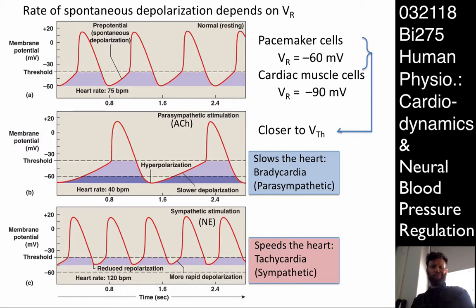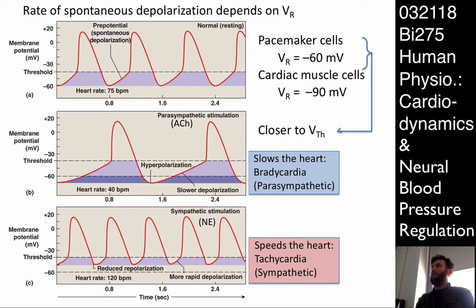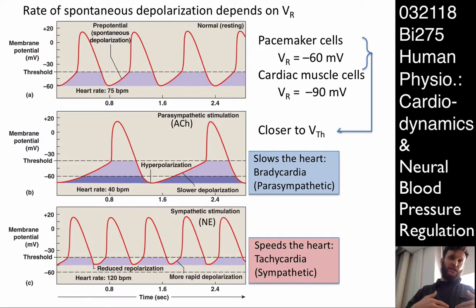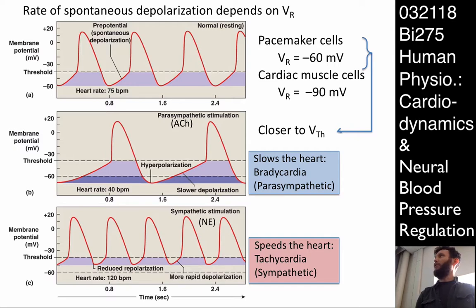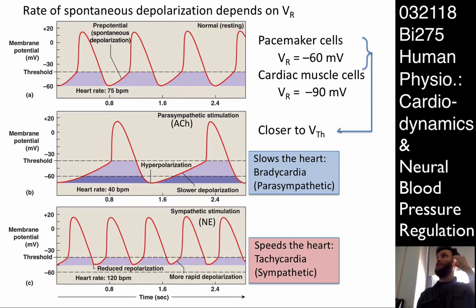Here's how it actually works. The top panel shows a normal heart rate. You're sitting there listening and your heart is beating maybe 75 beats per minute. The threshold is at maybe minus 40 millivolts. The cell begins to spontaneously depolarize, reaches threshold, we get a depolarization and then a repolarization, followed by a subsequent spontaneous depolarization — the pre-potential — until we reach threshold again. These specifics give rise to the heart rate we observe.